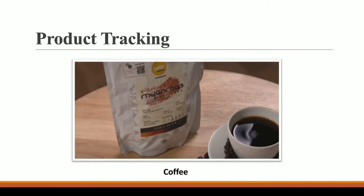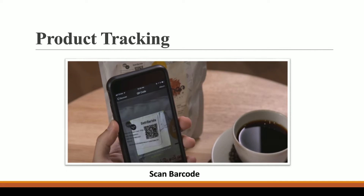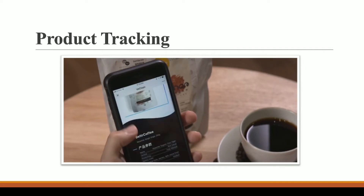How can we prevent situations where we are buying something and don't know whether the product is legitimate or not? With blockchain, we can track the product. The product will have a barcode. Once you scan it, the barcode tells you each and everything about this coffee — where it started, from which country it originated, what modes of transportation were used to bring it, say from Brazil to India or Brazil to USA.